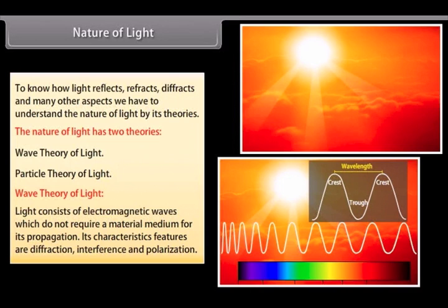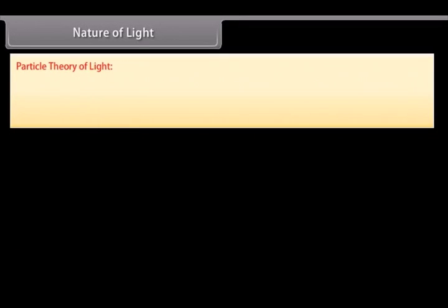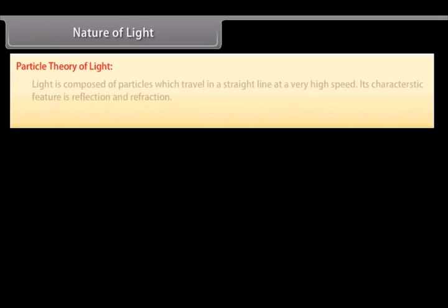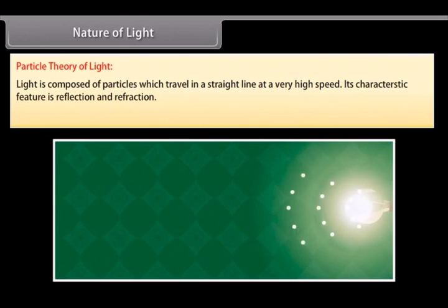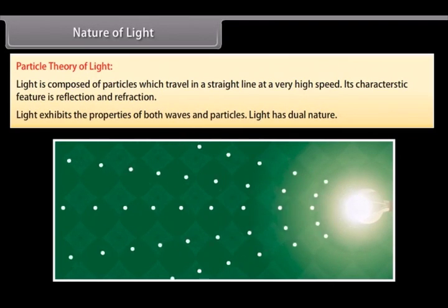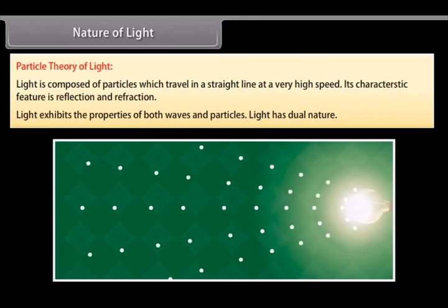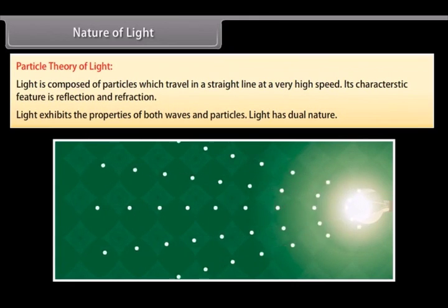Particle theory of light: light is composed of particles which travel in a straight line at a very high speed. Its characteristic features are reflection and refraction. Light exhibits the properties of both waves and particles. Light has dual nature.